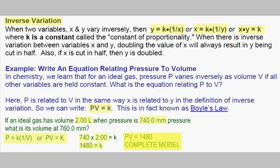We can now use this model PV equals 1480 to find other answers to this situation. Our other question here is, what is the volume when the pressure is 760 millimeters? We now plug into the completed model. I plug in 760 for P and the constant of proportionality 1480. That gives me 760V equals 1480. I can algebraically solve this by dividing both sides by 760, and I get V equals 1.95 liters. As you would expect, increasing the pressure ended up decreasing our volume, since pressure and volume vary inversely.